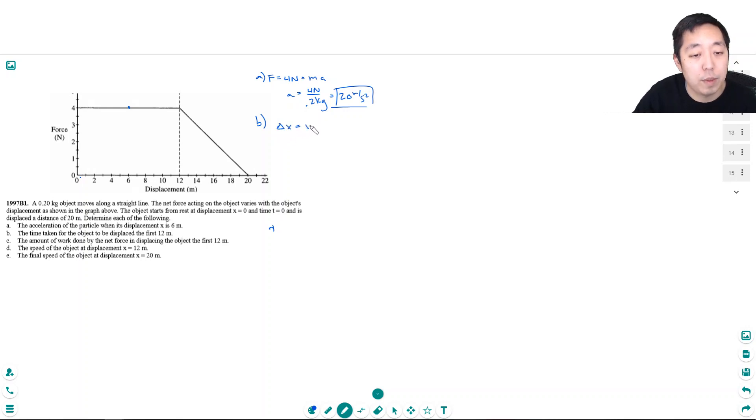I can use this kinematic equation, v naught t plus 1 half at squared. Okay, actually no, so the initial velocity was zero, because it starts from rest.